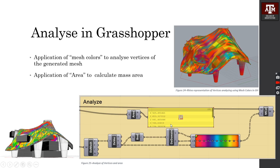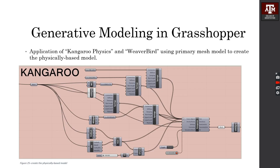The next step is to analyze the final model in Grasshopper. I used mesh colors and area to calculate mass area and to analyze the curvature in Grasshopper. The next step is to generate a generative model in Grasshopper, and I used Kangaroo physics, connecting the primary mesh into Kangaroo physics.